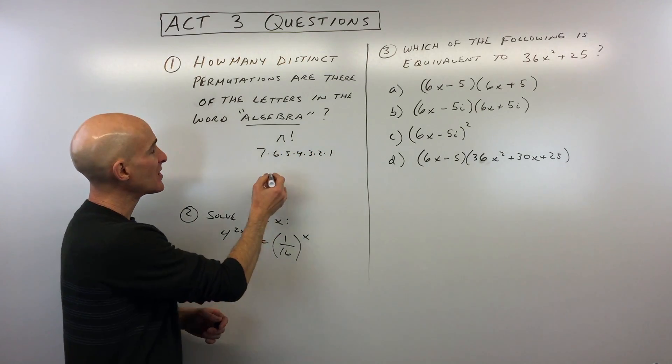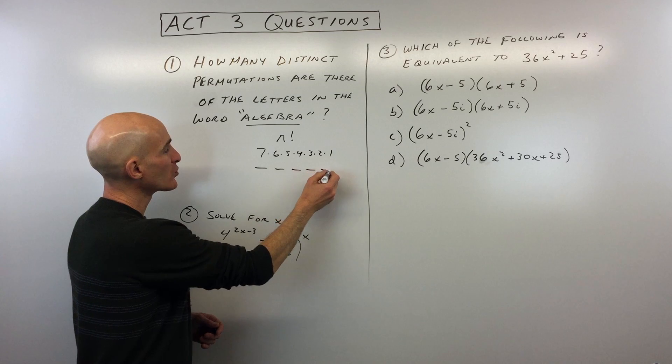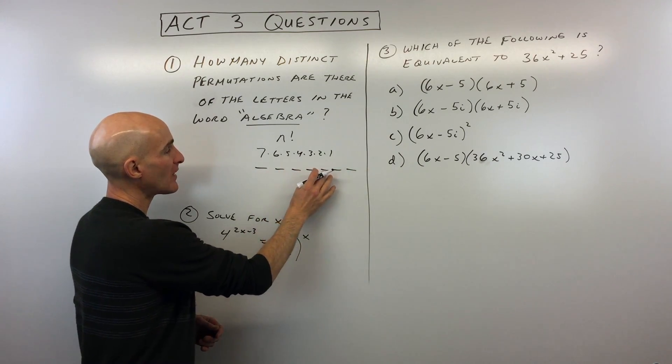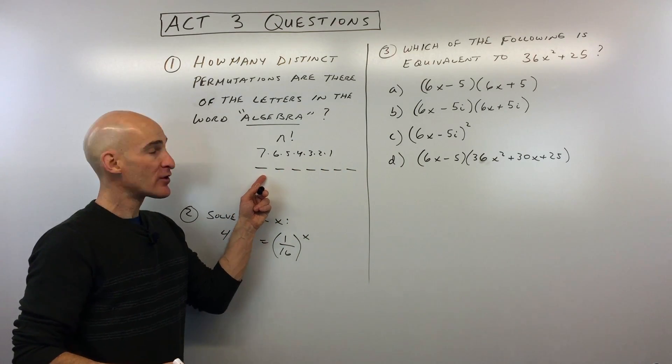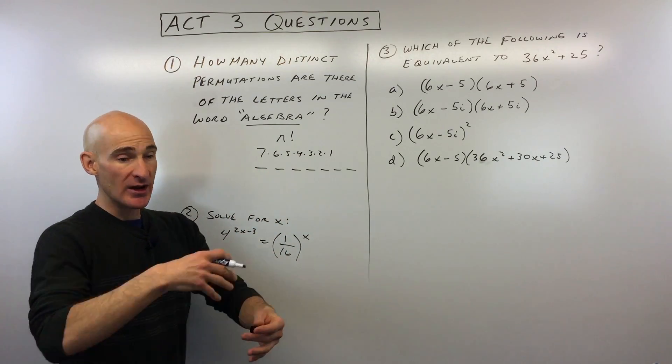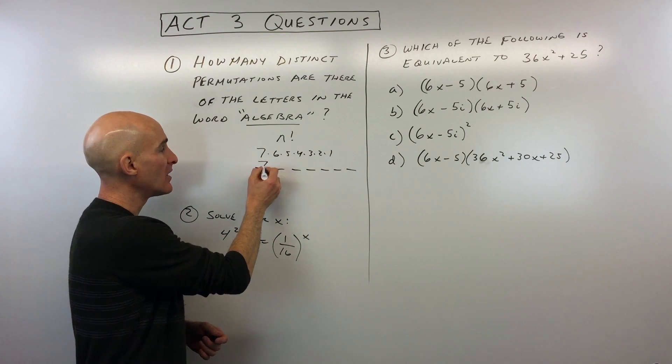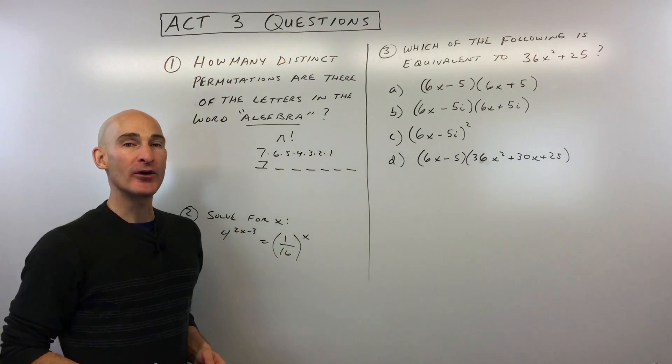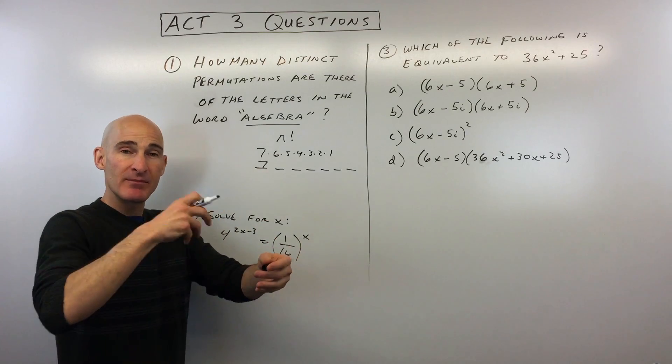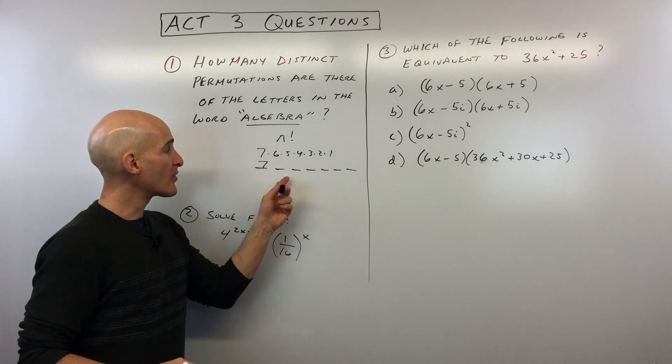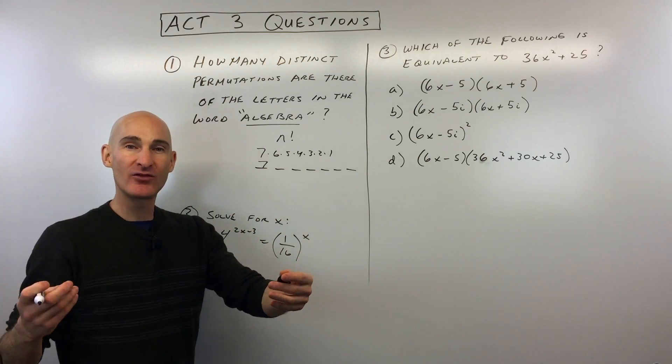And the reason we're doing that is because if you look at the seven letters in the word algebra, one, two, three, four, five, six, seven, how many choices are there for this first letter? Well, there's seven, right? If you put them in a hat and you mix them up, how many ways could you pick a letter? Well, there'd be seven different letters in that hat that you could pick out.